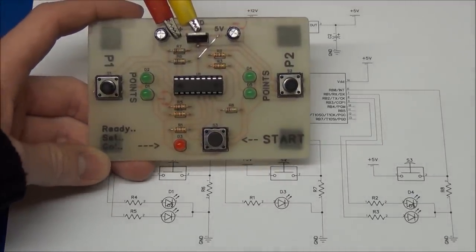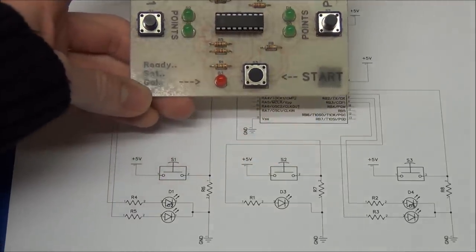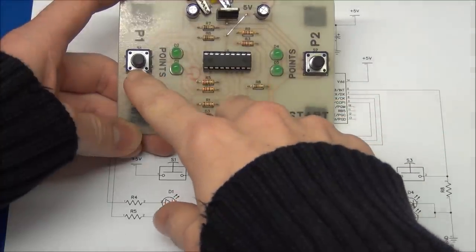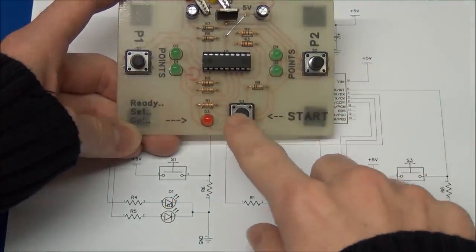And if we take a look at the board you can see that it looks almost exactly like the schematic. So we have the microcontroller here, we have one player here, the other player here and the start button here.